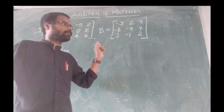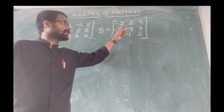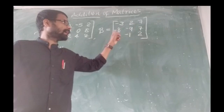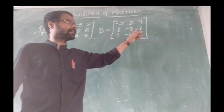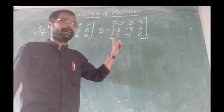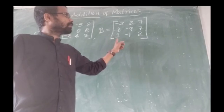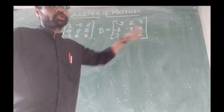Matrix B has the elements: minus 3, 2, 7. And minus 8, 9, 7. And 1, minus 1, 2.